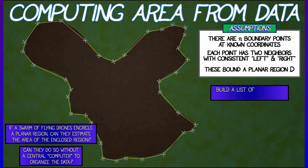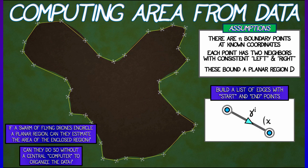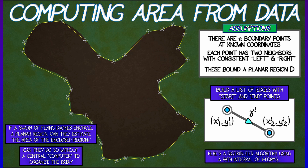Can you estimate the area of D using just this local information? We can, by building a list of edges with start and end points. Call these edges γ_i, for i going from 1 to n. Each has a start point with coordinates (x1_i, y1_i) and an end point with coordinates (x2_i, y2_i), where the superscripts denote the coordinates of the start and end points of the i-th segment in the boundary path.